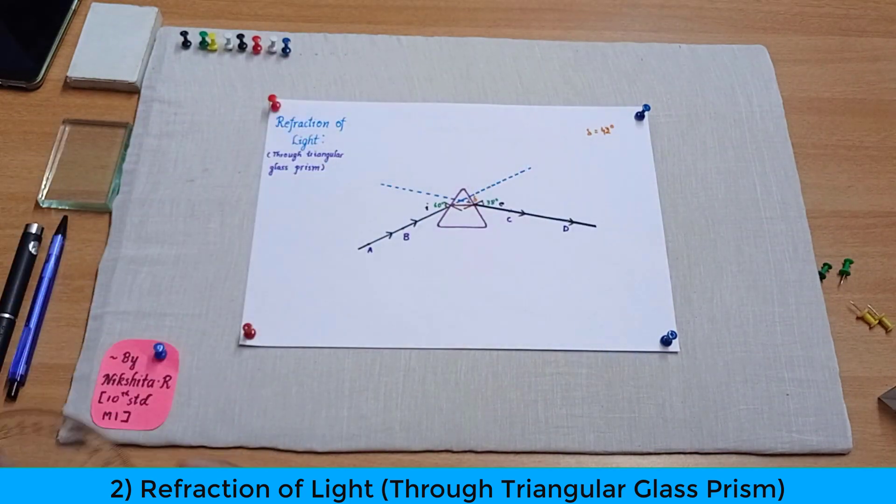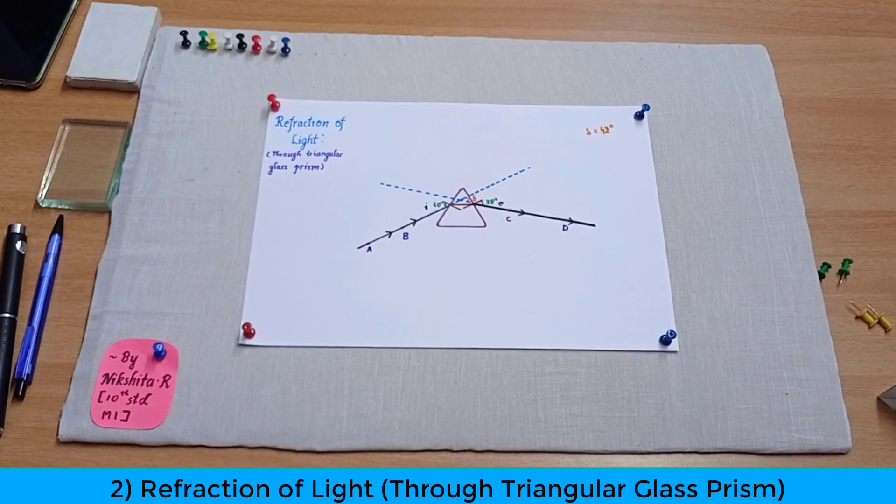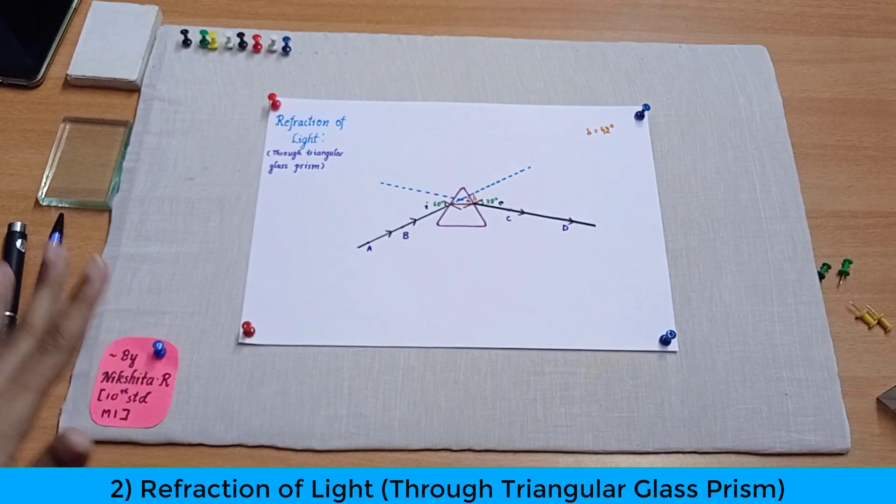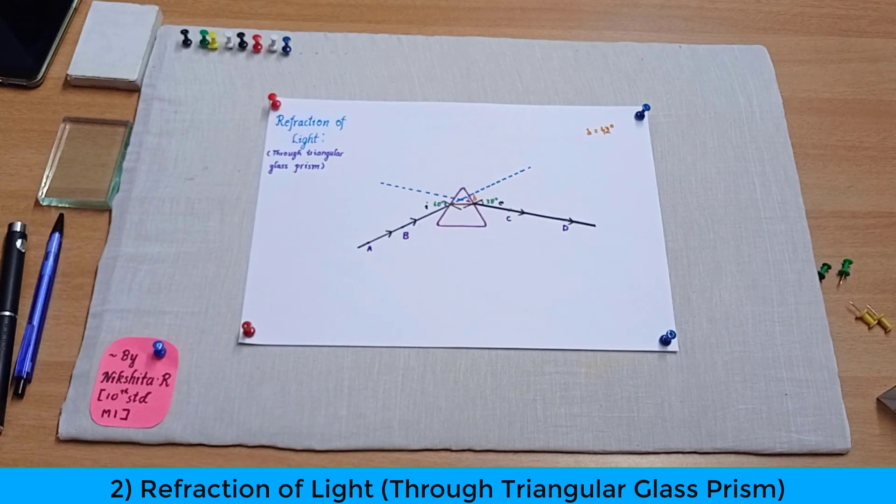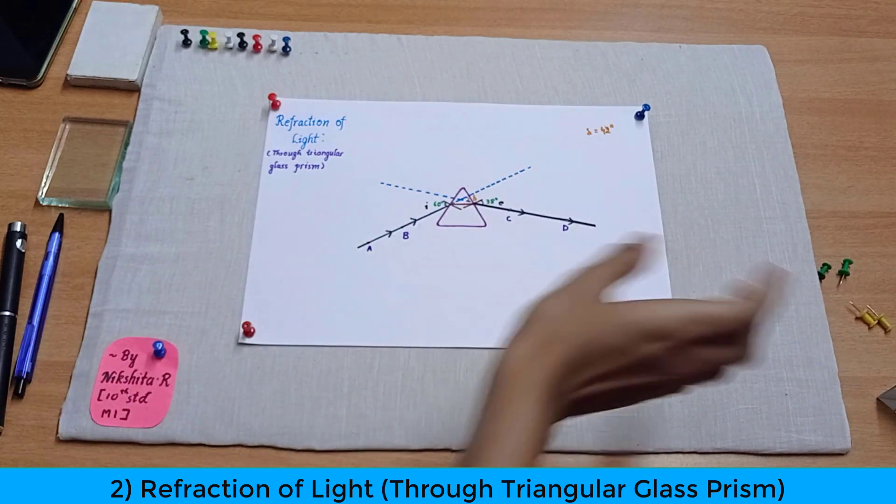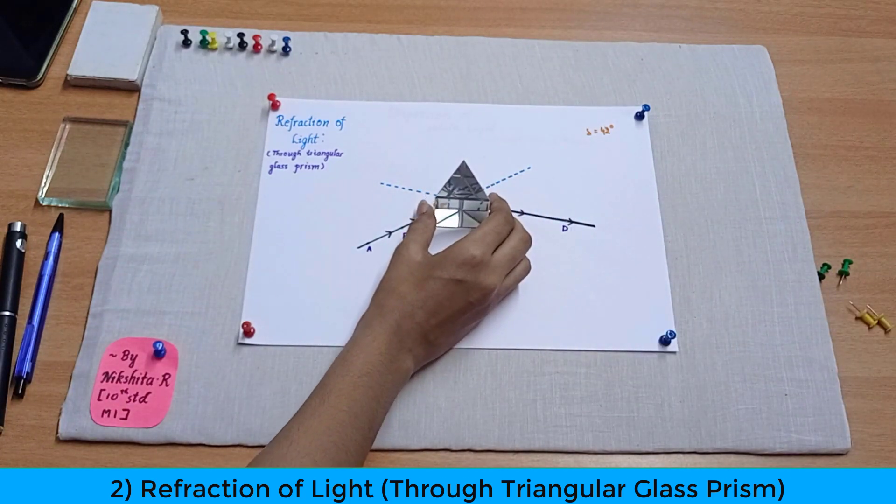So now I know all this looks a bit complicated and it's a bit difficult to understand. So now the sole purpose of this project is to make you understand how light behaves when it passes through a prism. So now I'll do this easily by showing you in an easier manner.